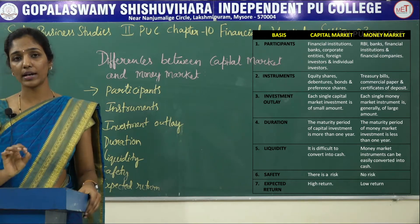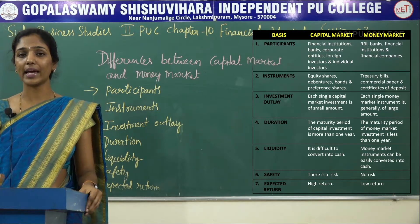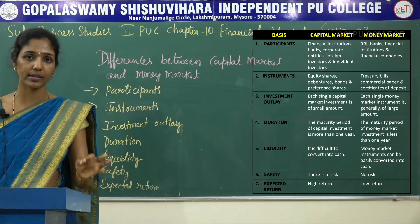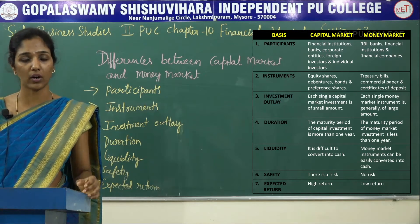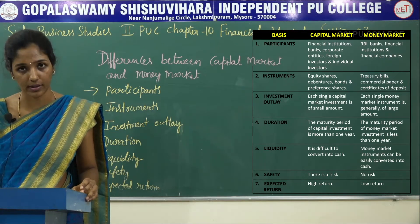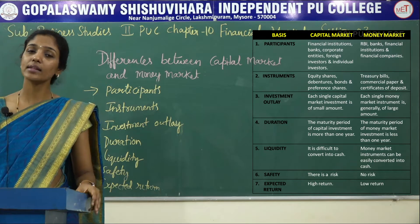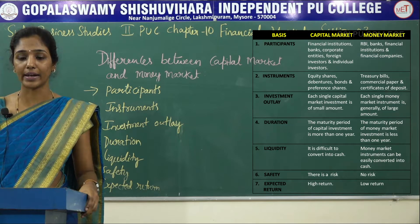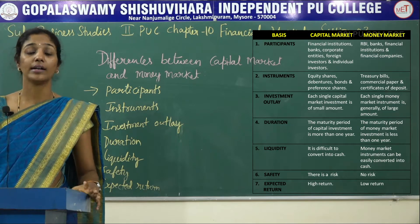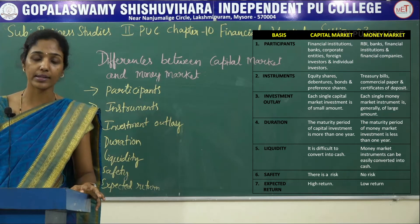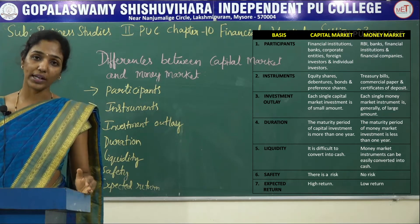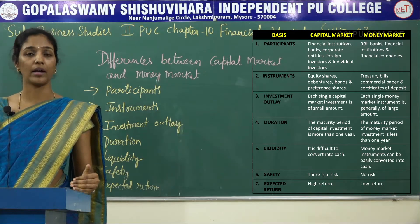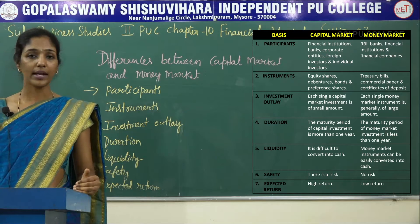The main instruments traded in capital markets are shares, debentures, bonds, and other securities. Whereas in the money market, the instruments traded are treasury bills, certificate of deposits, call money, commercial bills, etc.